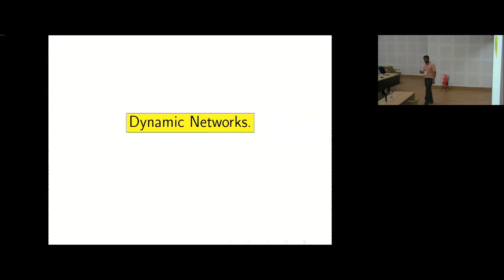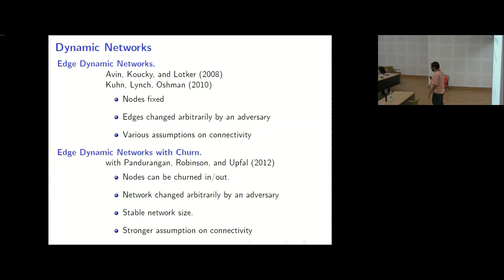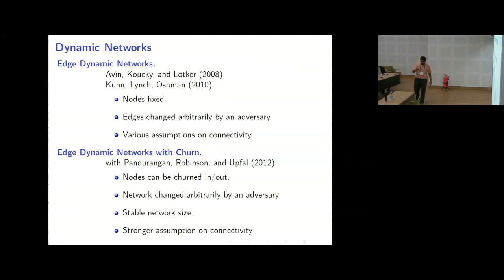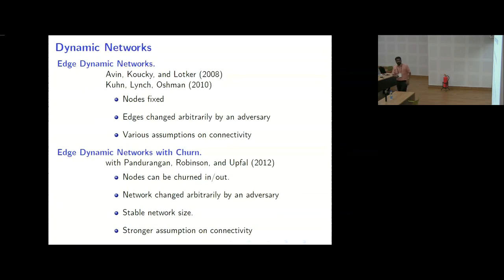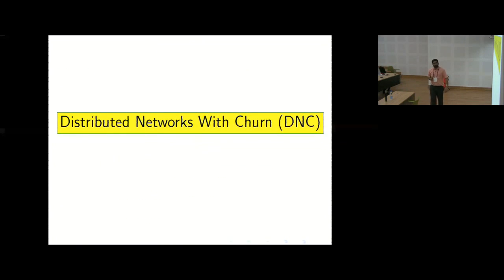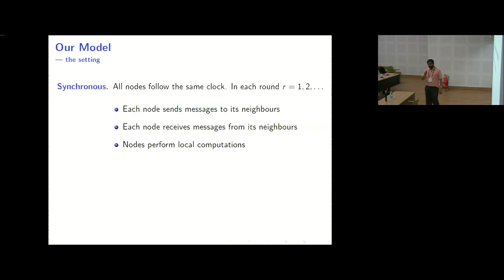In order to understand peer-to-peer networks, we framed them as dynamic networks. Dynamic networks have been studied mostly in the theoretical sense as edge-dynamic networks. What we wanted to introduce — motivated by peer-to-peer networks — was dynamic networks with churn as well, meaning nodes coming into and leaving the network. Here is the model for dynamic networks with churn that we use to model peer-to-peer networks.